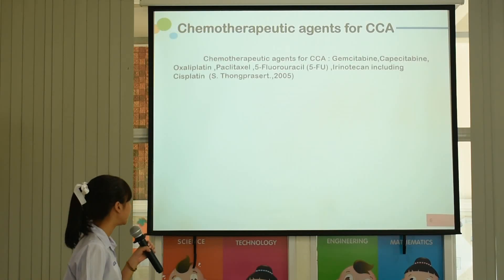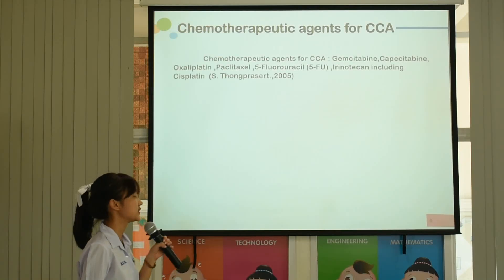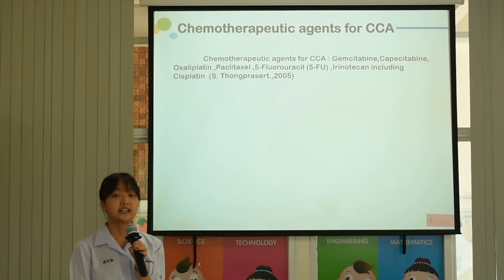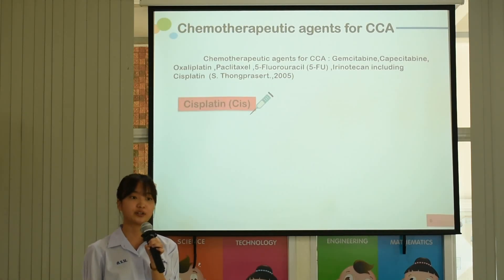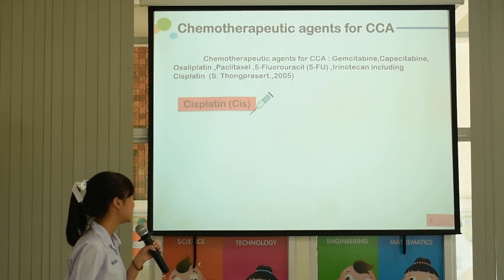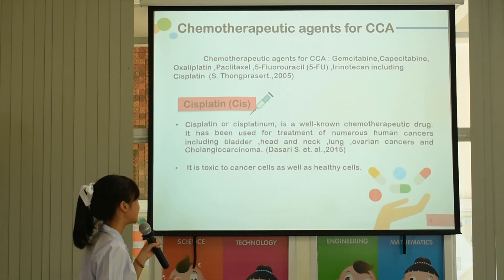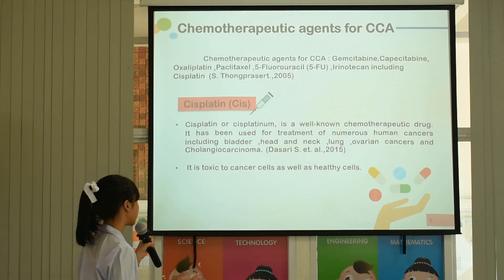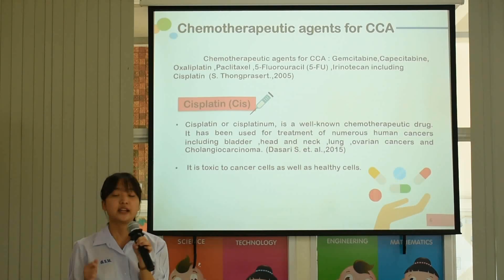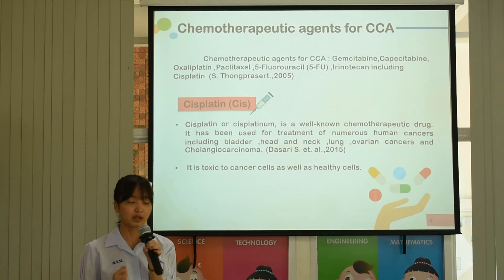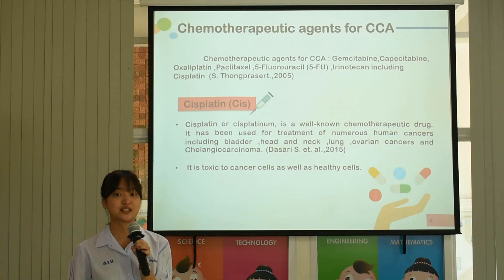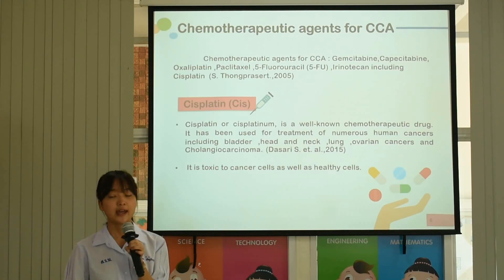Here is the list of chemotherapeutic agents for CCA, including Cisplatin. In this study, I focused on the anti-cancer effects of Cisplatin. Cisplatin is a well-known chemotherapeutic drug. It has been used for numerous human cancers, including CCA, but it is toxic to cancer cells as well as healthy cells.